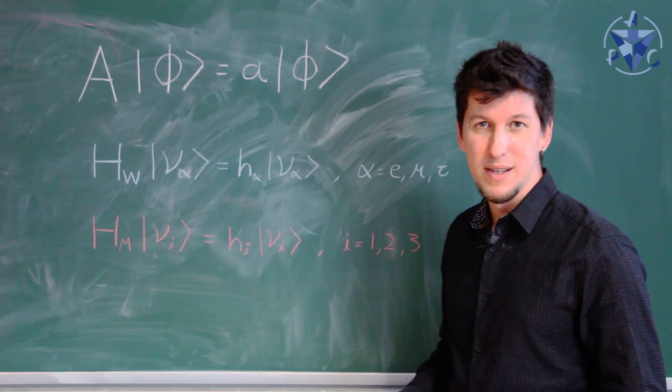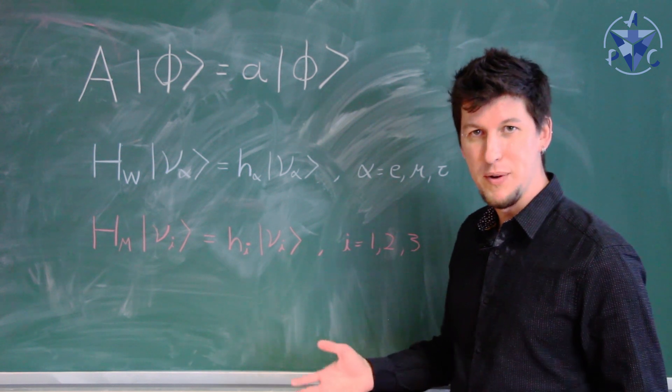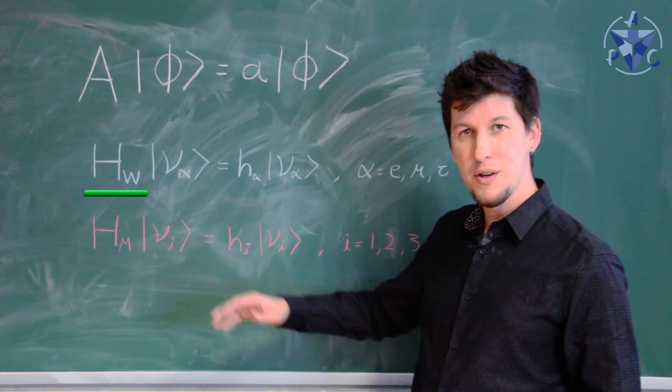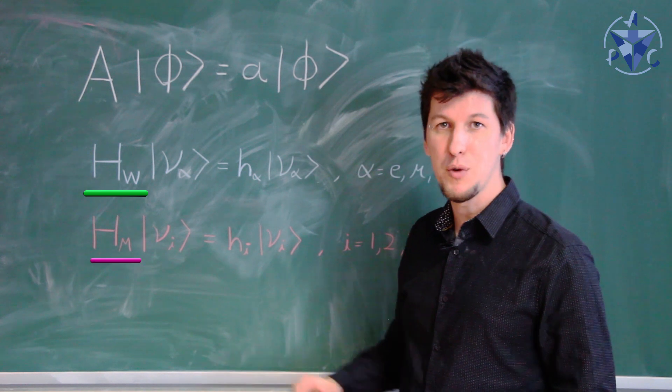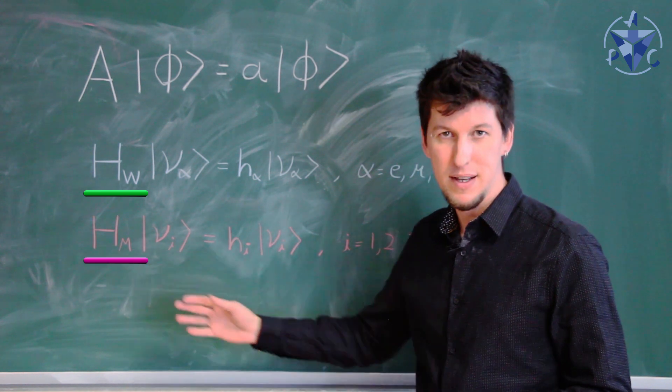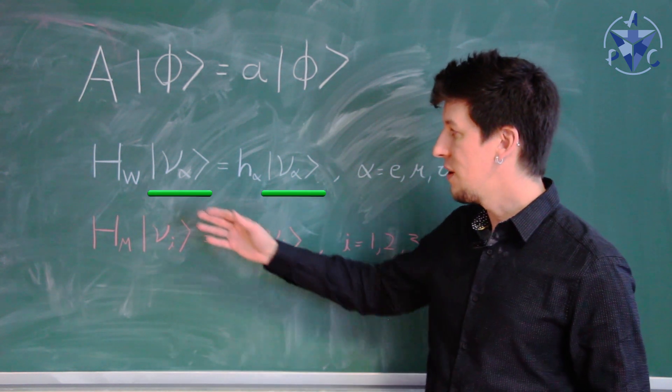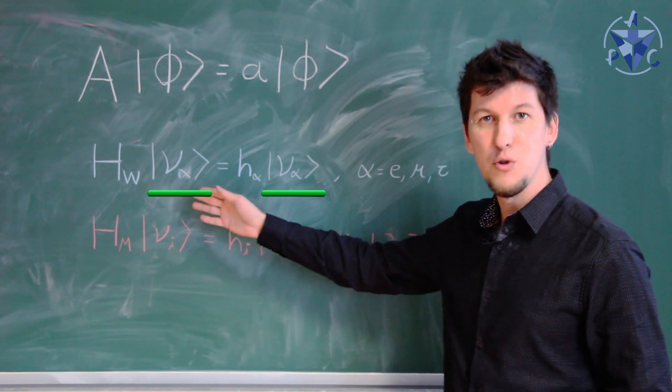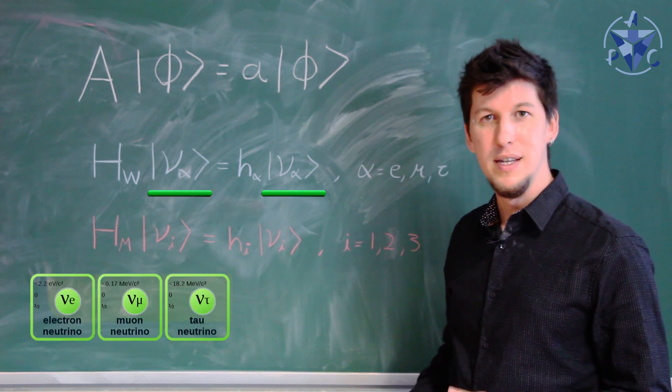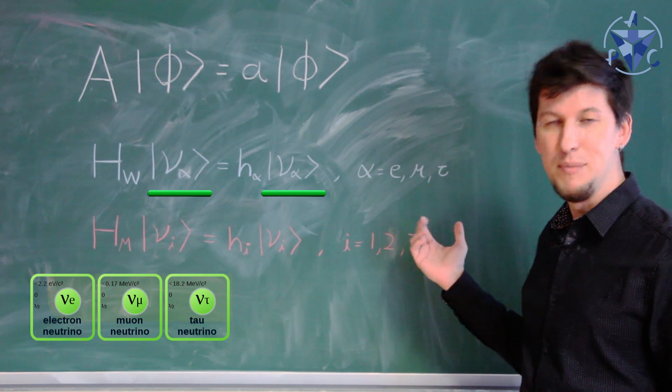In neutrino physics, we have two special types of operators. These are the Hamiltonian of the weak interaction and the Hamiltonian that generates the neutrino mass. The eigenstates of the weak interaction are the neutrino types that we talked about: the electron, the tau, and the muon neutrinos.